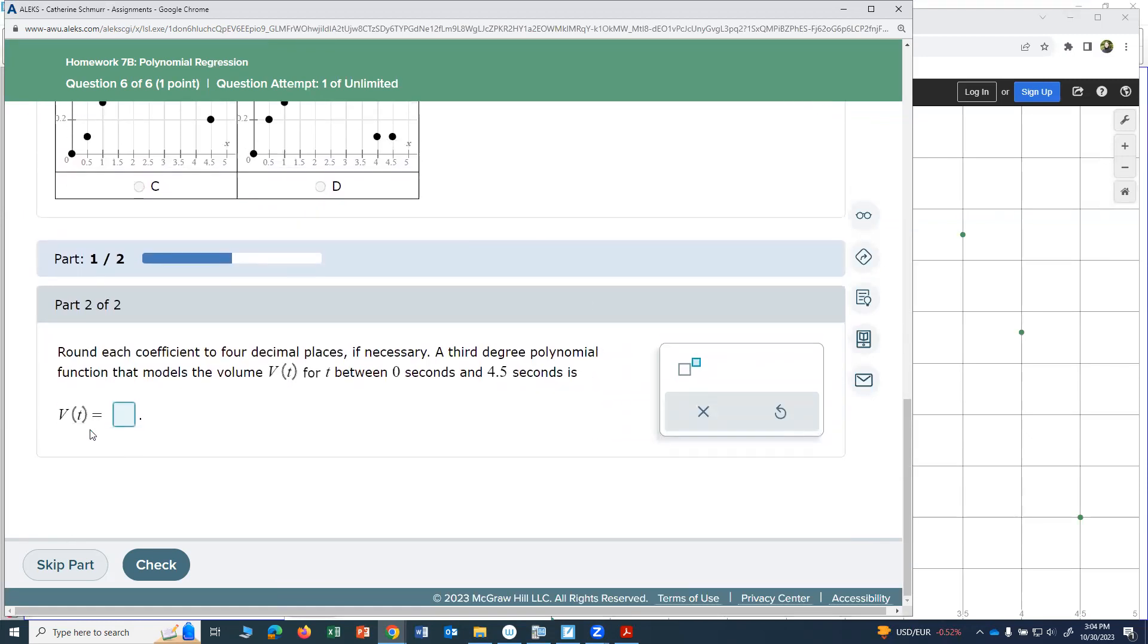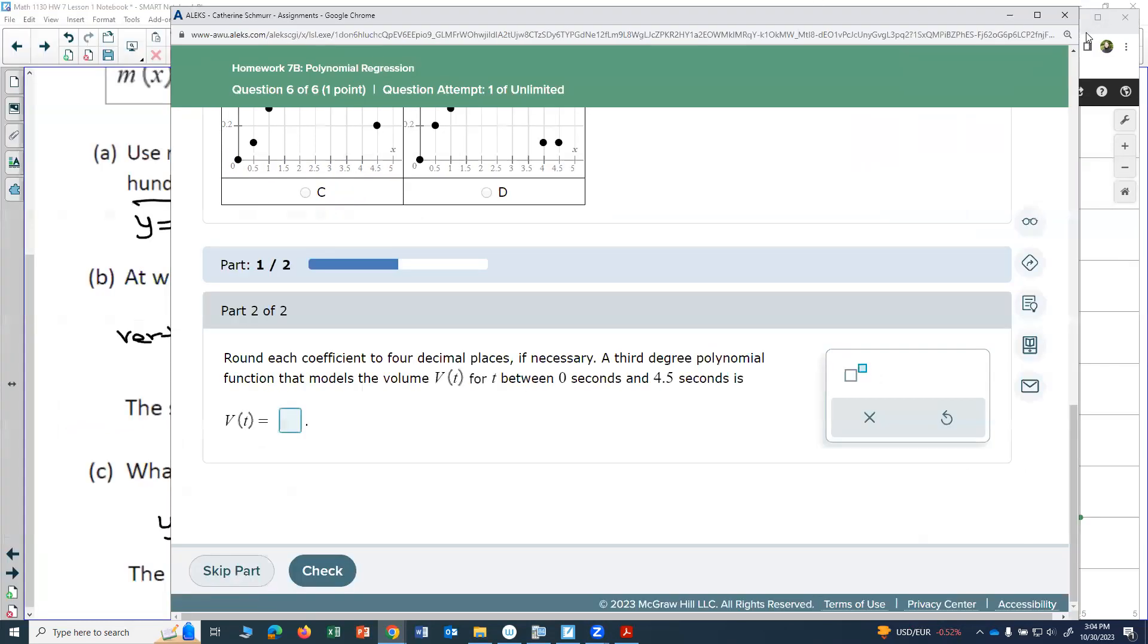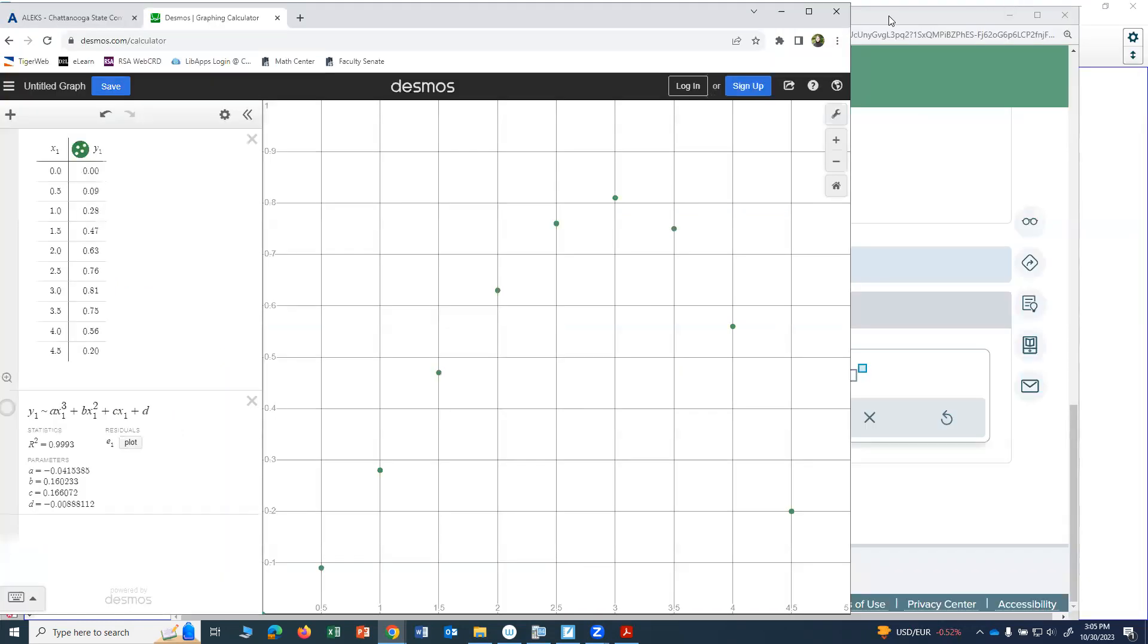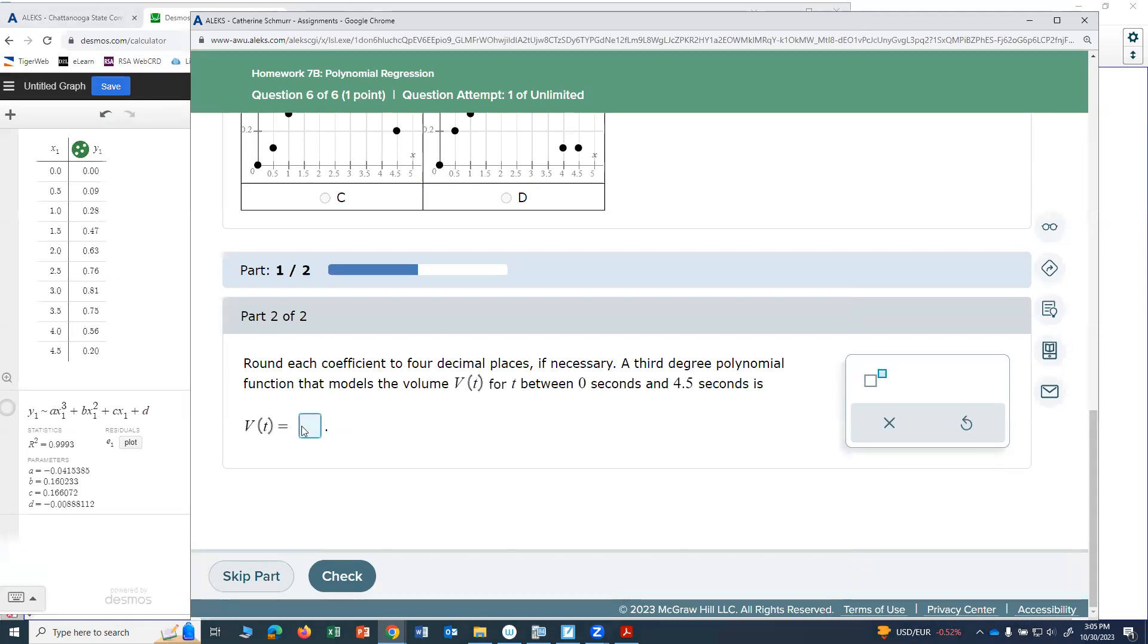And now they want the equation. All right, so I need the equation that's over here. I'm going to switch where these two screens are. Okay, so I've got my equation right here. They say round each coefficient to four decimal places, if necessary. So my A is negative 0.0415, and then I have to do X cubed. My B is 0.1602, and that's attached to an X squared. Then I'll do 0.1661, that's attached to an X. And then minus 0.0089.